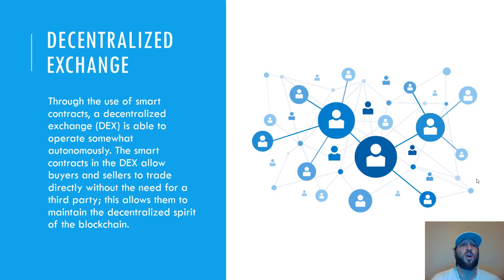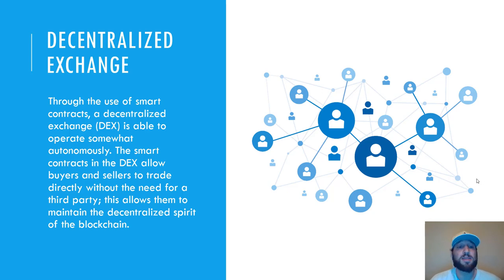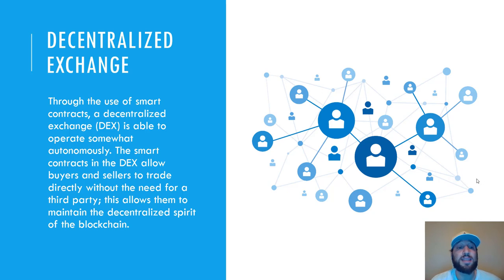Now we have a decentralized exchange, which are not as popular right now. They're still up and coming and they don't have as much volume, but they're used through smart contracts. A decentralized exchange, also known as a DEX, is able to operate somewhat autonomously. The smart contracts and the DEX allow buyers and sellers to trade directly without the need for a third party, peer-to-peer.